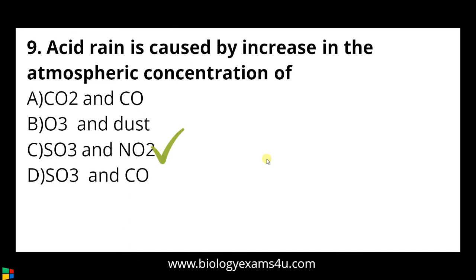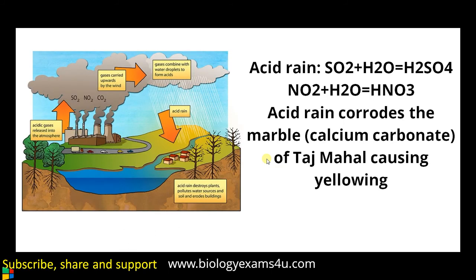The answer is sulfur dioxide and nitric oxides. From industrial pollution or volcanic eruptions, sulfur dioxide and nitric oxides are released into the upper atmosphere, where they combine with water to form sulfuric acid and nitric acid, which then come down with rain as acids, causing damage to vegetation, water streams, and even causing irritations to humans.